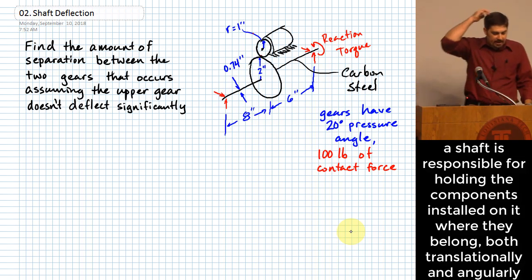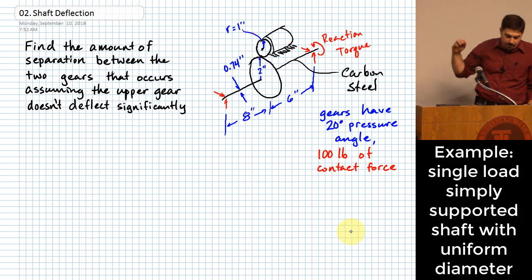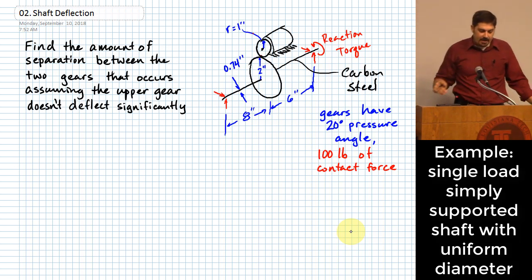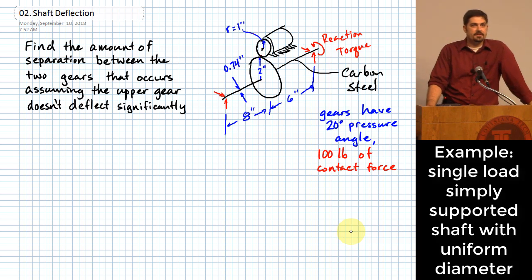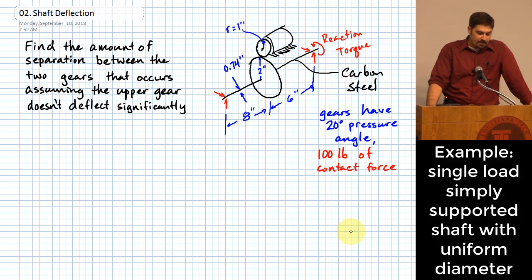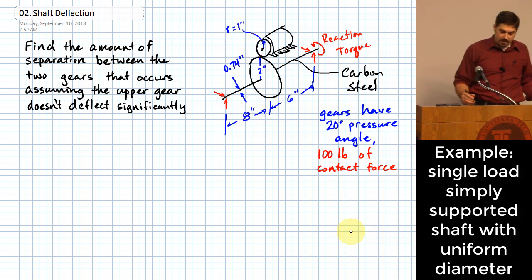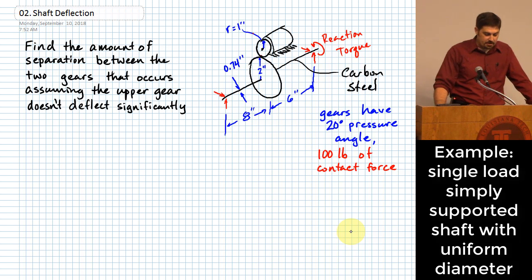Here's the problem we're going to do today. We have a uniform diameter shaft going from one bearing to another. The bearings are at the ends of the shaft. There's an eight-inch spacing on the front side and a six-inch spacing on the back side. The diameter of the shaft is 0.74 inches. The gear installed on the shaft has a diameter of four inches, giving a radius of two inches. The gear it mates with above has a radius of one inch, or a diameter of two inches.